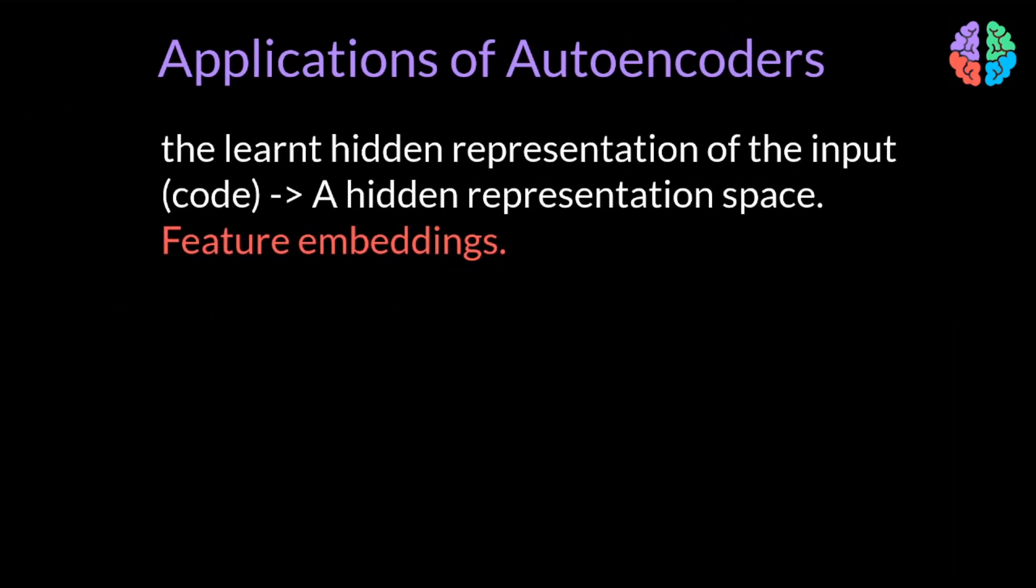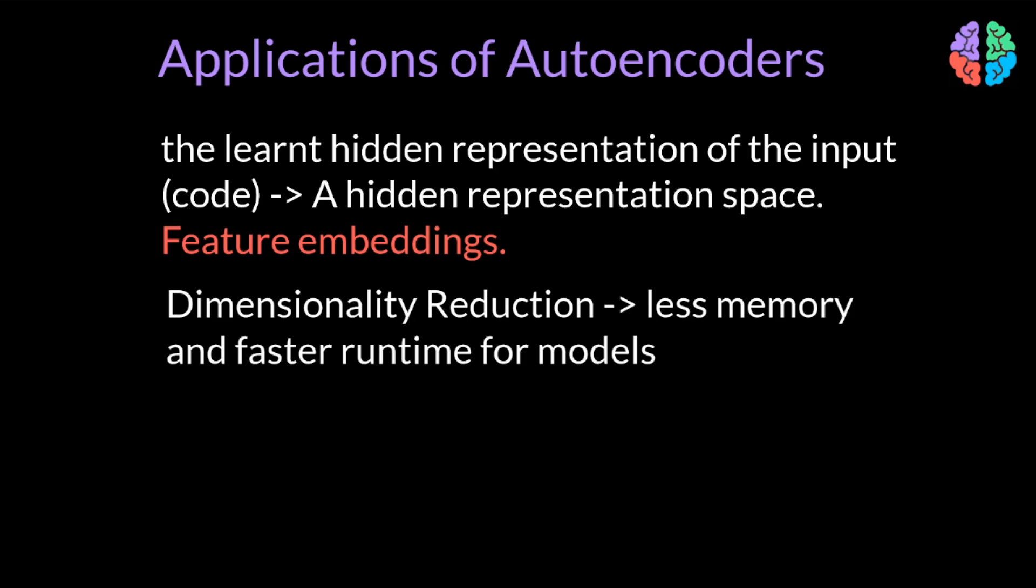In terms of applications of autoencoders, clearly copying the input to the output is not very useful. What is indeed useful is the learned hidden representation of the input in a lower dimensional code, H. Now these hidden representations can act as feature embeddings from the input. Traditionally, autoencoders have been used for dimensionality reduction, where we reduce the inputs to codes and work with these codes to train the models instead of using the inputs themselves, thereby leading to less memory and faster runtime for the model. A useful byproduct of dimensionality reduction is information retrieval. Because we can reduce the input to lower dimensional space, we can even store them in hash tables and use these tables to retrieve information whenever we want them from a database.